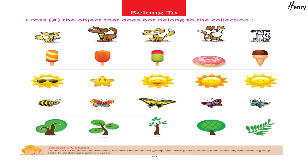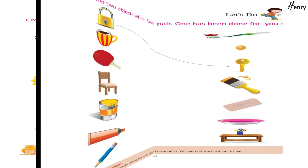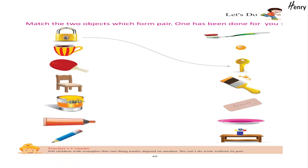Belong To: Cross the object that does not belong to the collection. Let's do — match the two objects which form a pair; one has been done for you.